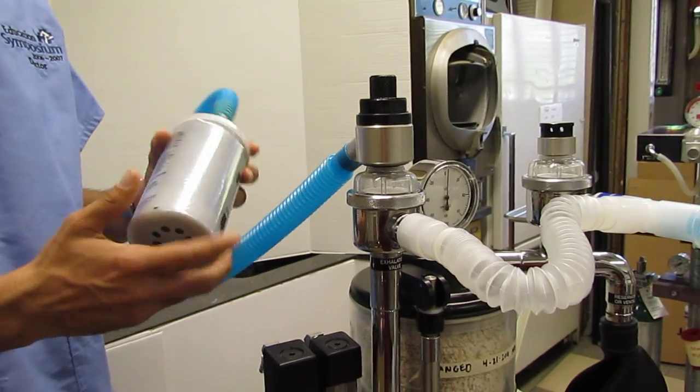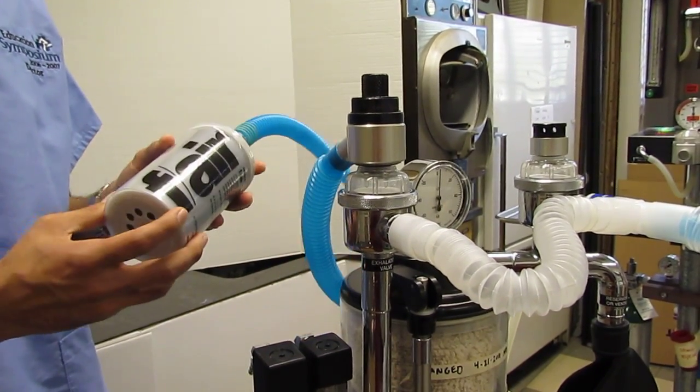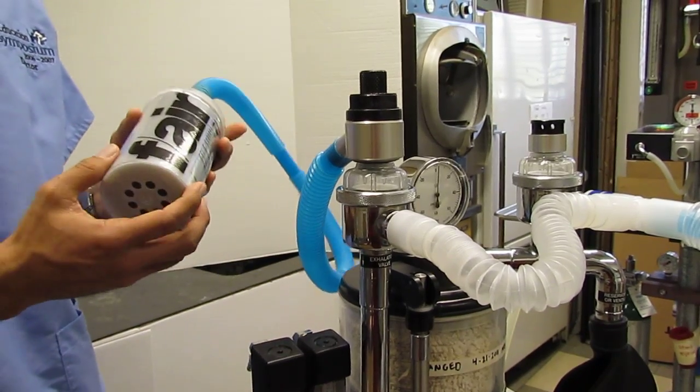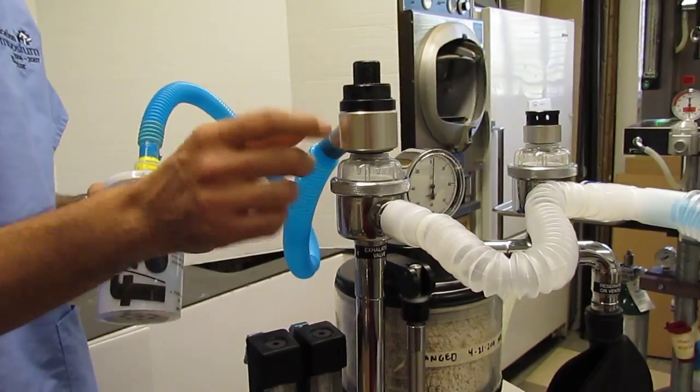This fair canister will gain 50 grams of weight when it has been used up. In other words, the activated charcoal will have absorbed about 50 grams of anesthetic gas. Okay, that's any excess anesthetic gas that leaves the system.